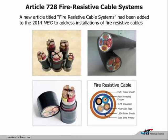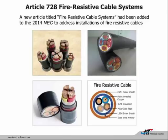Our third brand-new article is Article 728, the fire-resistive cable system. The cable has multiple layers and most installations will have a 3-hour fire rating. A lot of critical operation power systems require a 3-hour fire rating, so the cable matches up with that. This article doesn't have a lot in it at the moment, but as proposals are submitted it will become more user-friendly.